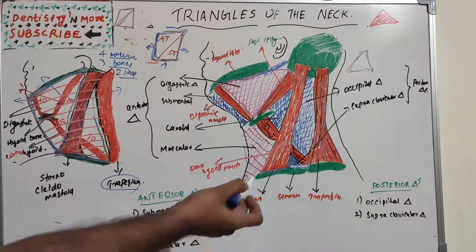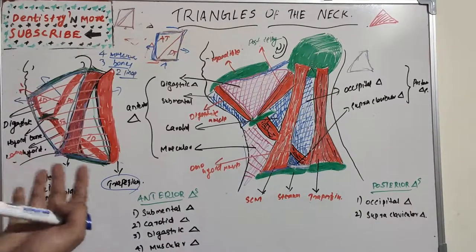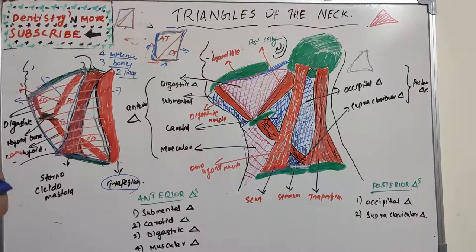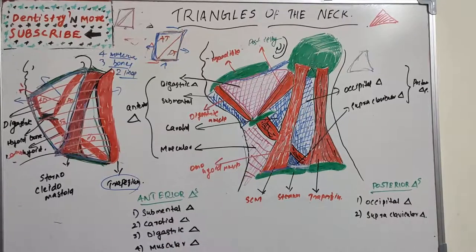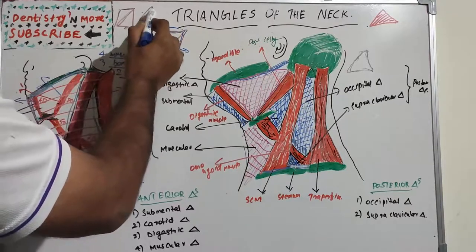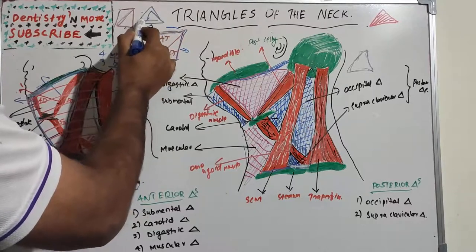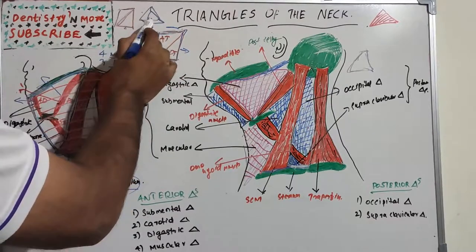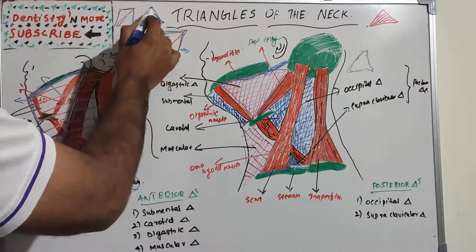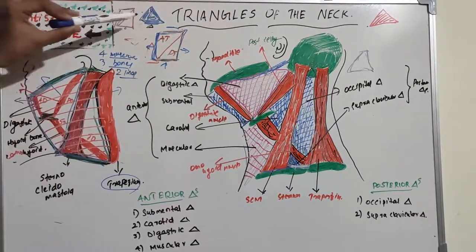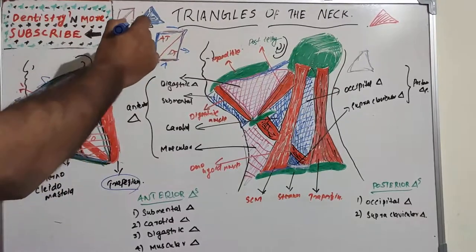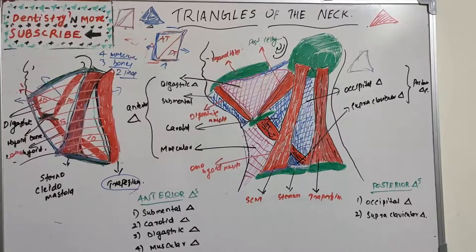The floor of the posterior triangle contains the prevertebral fascia and muscles such as splenius capitis, levator scapulae, and scalene muscles. The roof is formed by the investing layer of deep cervical fascia. Visualized in three dimensions, the triangle has a distinct floor and roof.